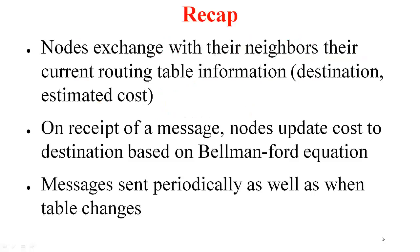For some of you it must have been a while since the distance vector algorithm, so let me quickly refresh your memories. Nodes maintain state in the form of routing tables — this contains the destination, cost, as well as the next hop. These nodes exchange routing table information pertaining to destination and estimated cost with their neighbors. When a node receives one such message, it updates its own routing table based on the Bellman-Ford equation, basically choosing the best path based on its current estimate as well as the information contained in the message. Such messages are sent periodically as well as whenever the table changes.